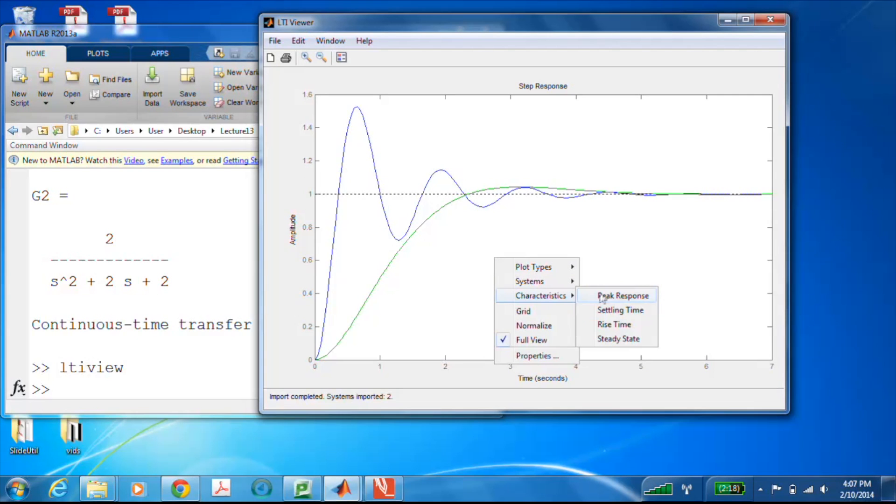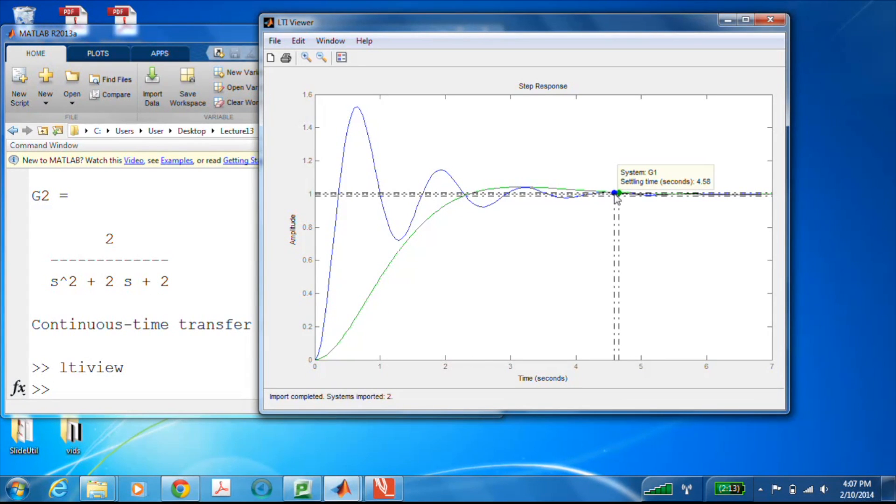If I right click in here, I can go to characteristics and pick settling time. And look at that. So both of those settling times are pretty close to each other. They're not quite 4.6. The lower zeta case is 4.58, and the higher zeta case is 4.66. But not too bad.